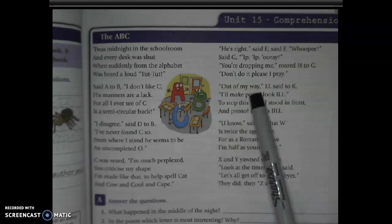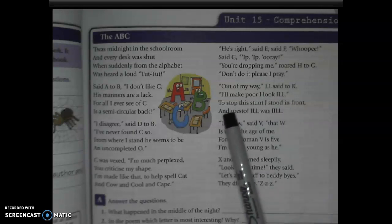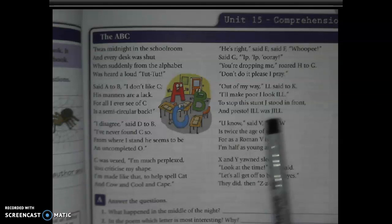'Out of my way!' L said to K. 'I'll make poor I look ill.' To stop this stunt, J stood in front, and presto! Ill was Jill.